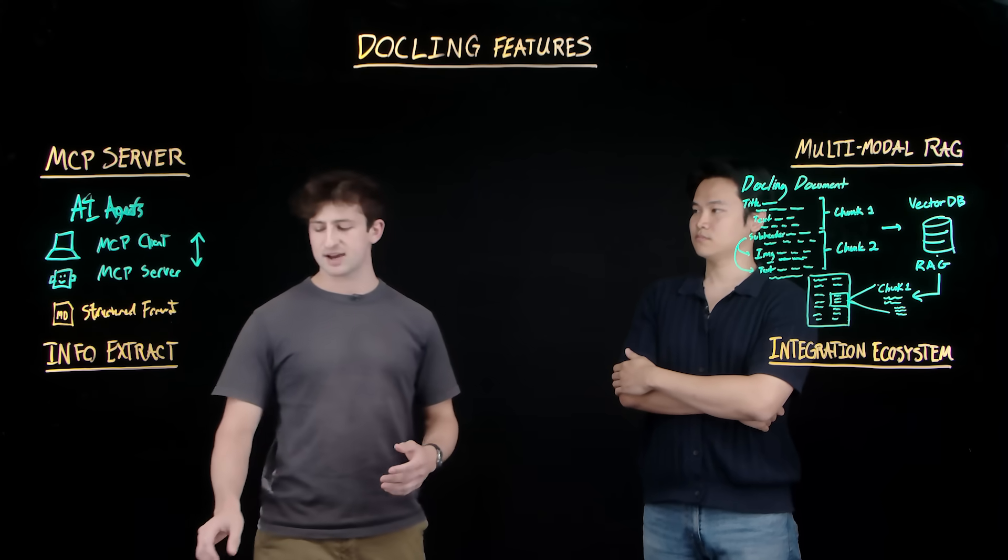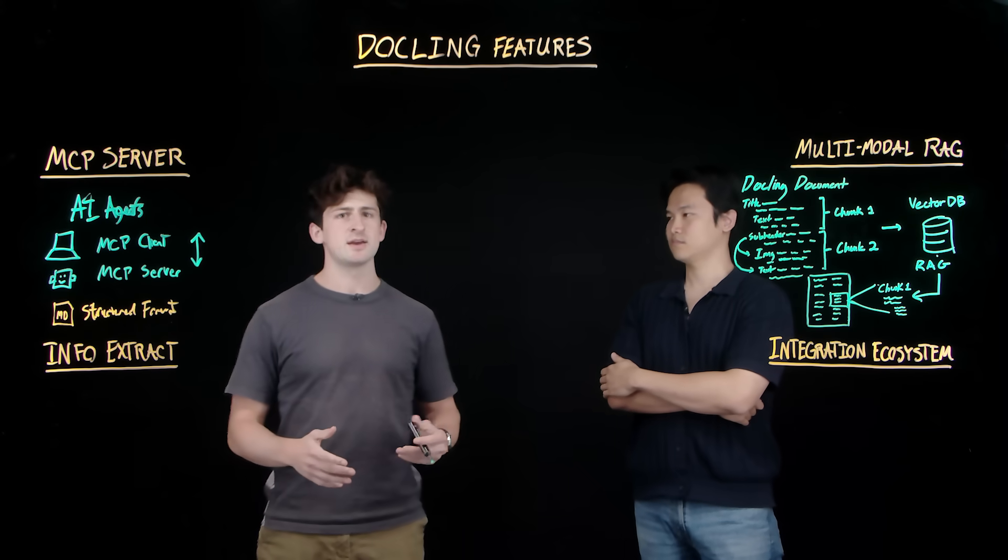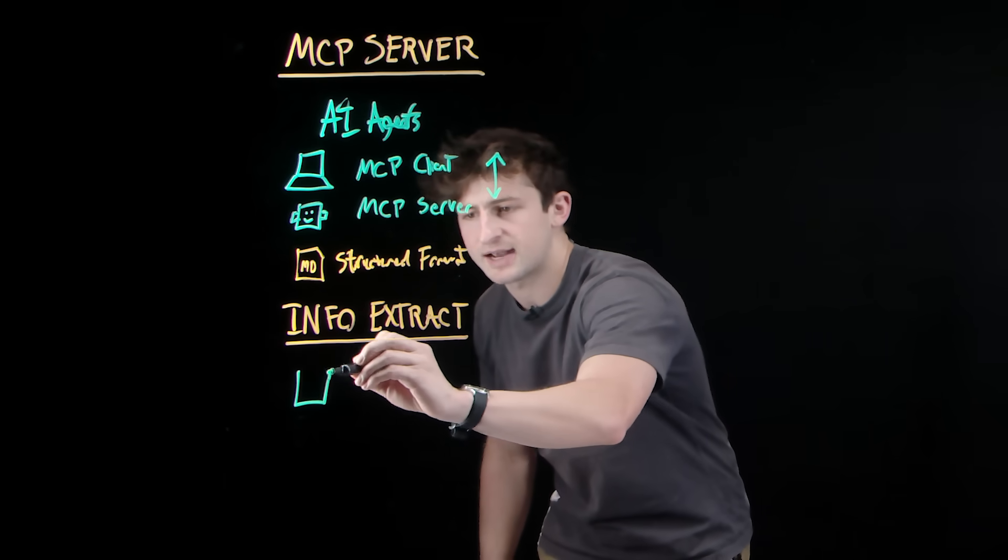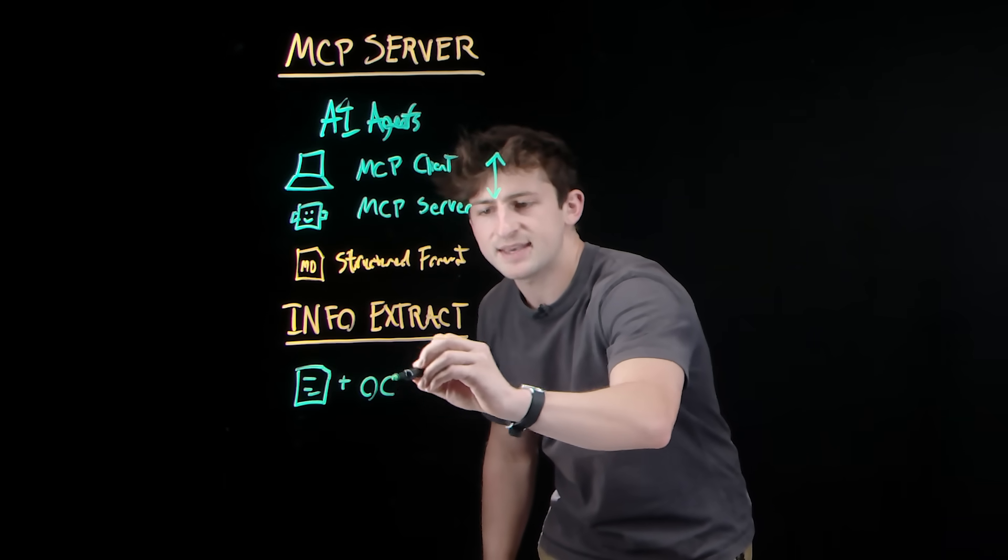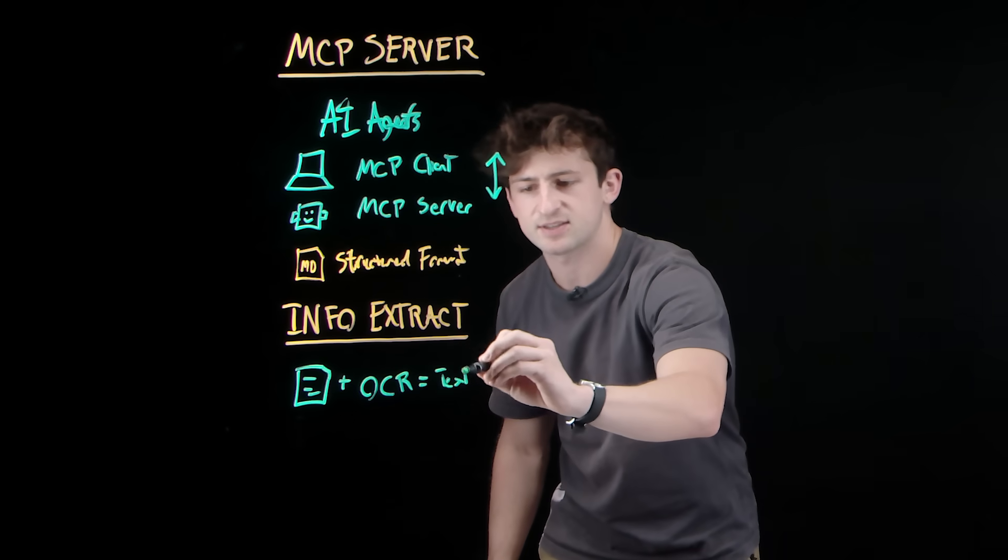Now, we mentioned how most business documents like invoices or reports are unstructured. But let's think about typical OCR, because when we have OCR in our business documents, what we get back as a result is just the text.